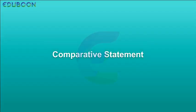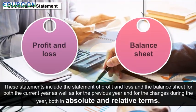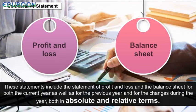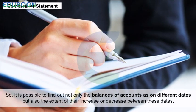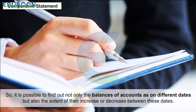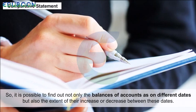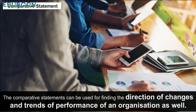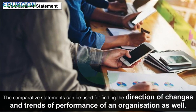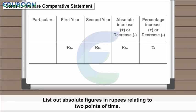Comparative Statements in Detail: These statements include the statement of profit and loss and the balance sheet for both the current year and the previous year, along with changes during the year in both absolute and relative terms. It is possible to find out not only the balances of accounts on different dates but also the extent of their increase or decrease between those dates. Comparative statements can be used for finding the direction of changes and trends of performance of an organization.